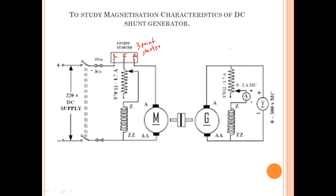Positive of the mains is connected to the line terminal L. The F point, which is the field point of the three-point starter, is connected to a rheostat, and the rheostat is connected to the field winding. The second terminal of the field winding, Z2, is connected to the negative.